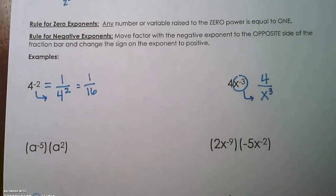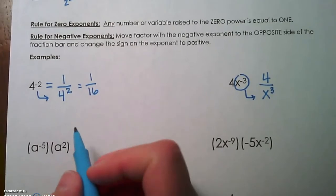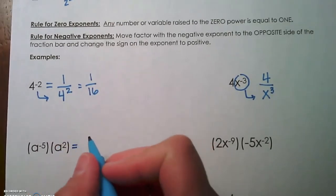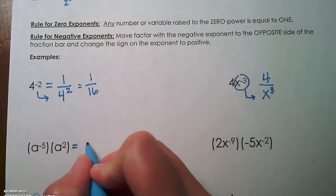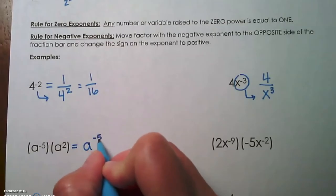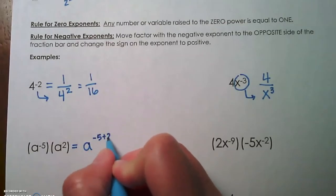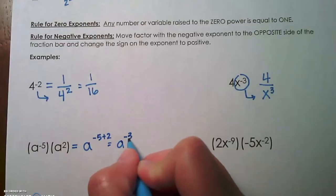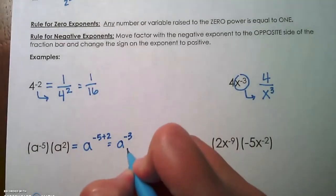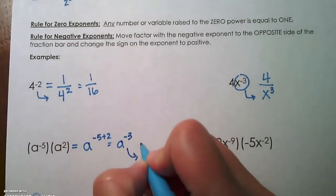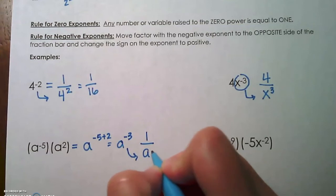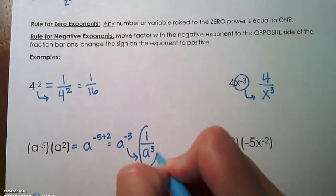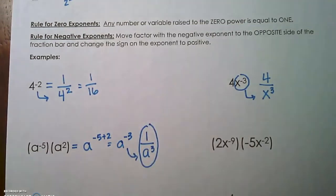a to the negative 5 times a squared — we are going to add those exponents using our product rule. We keep the base and add negative 5 plus 2, which is a to the negative 3. Now we have to clean that up and make our exponents positive, giving us 1 over a to the positive 3.